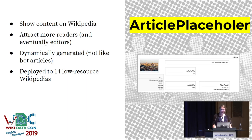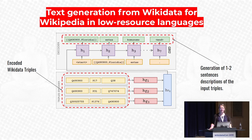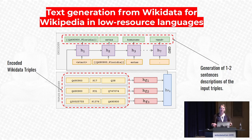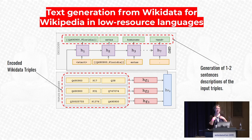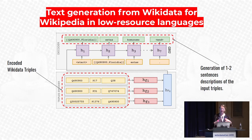If you're part of a Wikipedia community and interested in the article placeholder, let us know. Then I got stuck with it, so we started looking into text generation from Wikidata for Wikipedia in low-resource languages. Text generation research at that point was completely only focused on English, which is a bit pointless — we need people writing in those low-resource languages. Looking at raw triples on Wikipedia is not exactly what you want to see when you open a Wikipedia page, so we try to generate text.